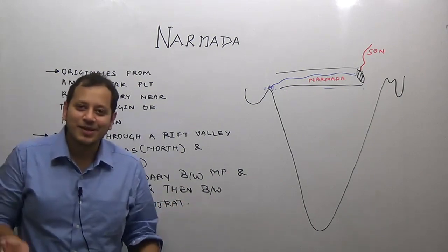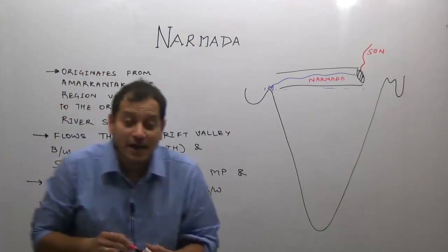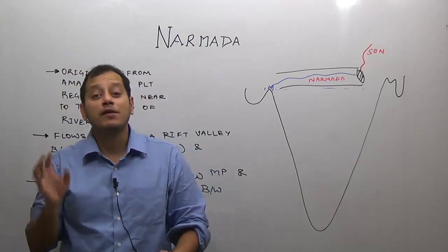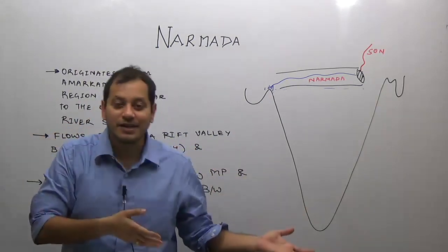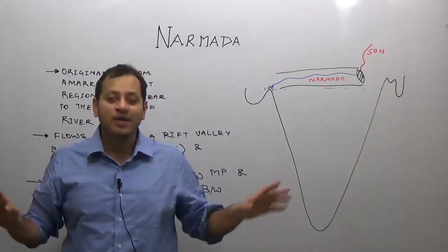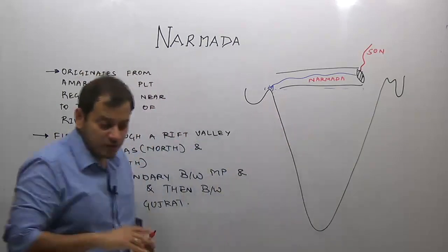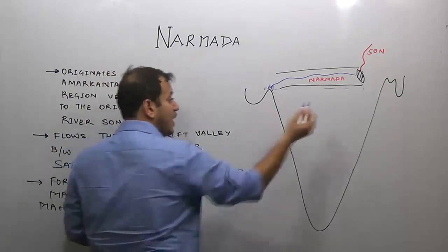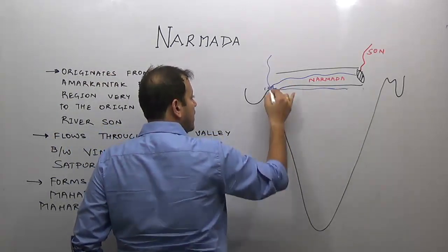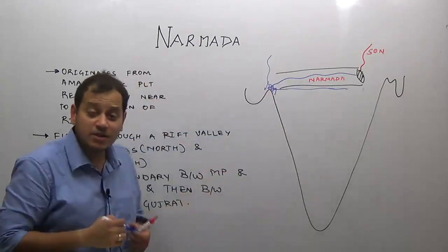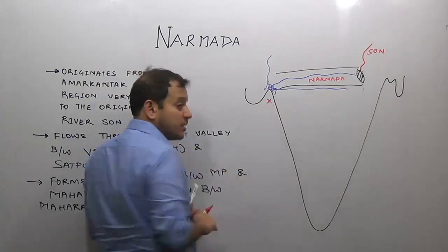River Narmada drains into the Gulf of Khambat or Gulf of Cambay. Several rivers drain into this region: Narmada, Tapi, river Mahi, and river Sabarmati all drain into the Gulf of Cambay region.